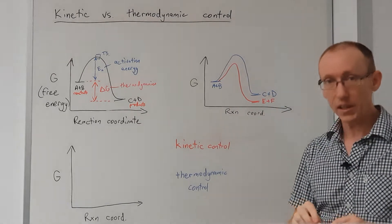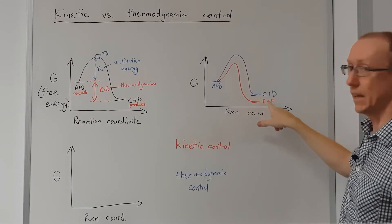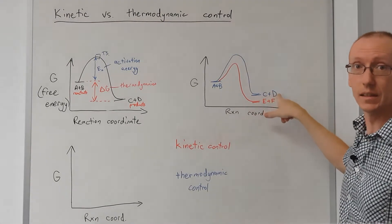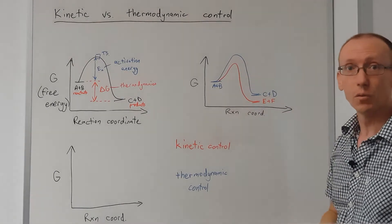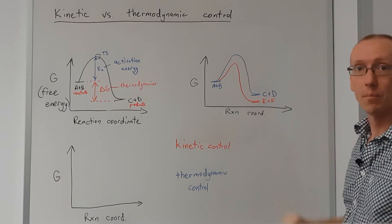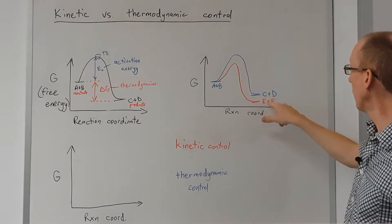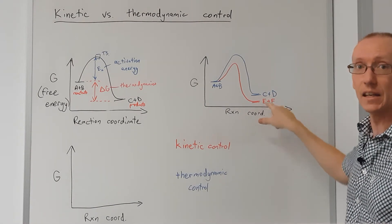Now this one is fairly straightforward. You can see that the activation energy to go to E and F is lower than to go to C and D. And therefore the rate at which E and F is faster than C plus D. Also E and F is more stable than C and D. And so therefore this red one here is both the thermodynamic and the kinetic product.